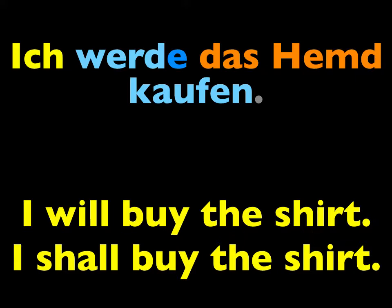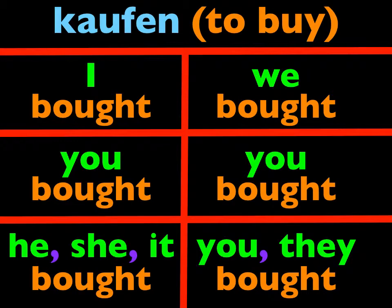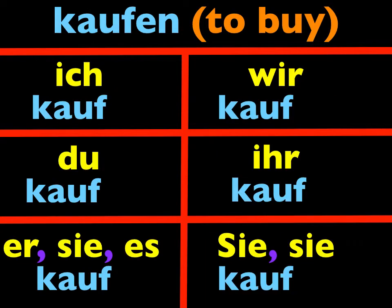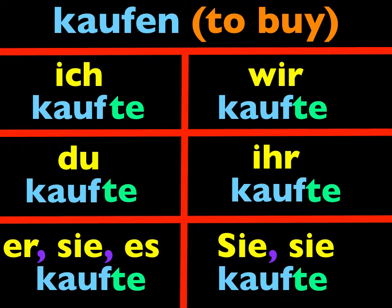Let's see how to form it for weak verbs. For most verbs, being weak, this tense is formed like this. First, the stem of the verb is kauf, as we know. And to that we add the letters -TE to all of the forms. Now we're almost done. The ich form is done, and so is the er, sie, and es form. In this tense, they are the same.